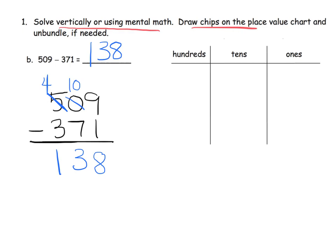Let's use the place value chart to verify. We begin by modeling 509 — so 5 hundreds, and then 9 ones. Notice there's nothing in the tens place because the number is 509; that zero means there's nothing in the tens place. Now it says take away 1 one — well that's easy, I just took it away, and that leaves us with 8 in our ones place.